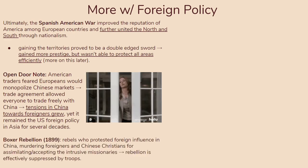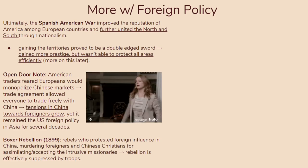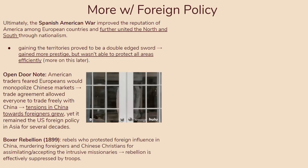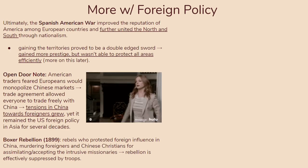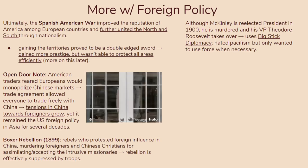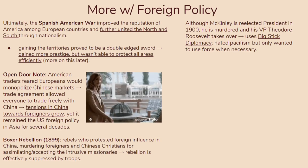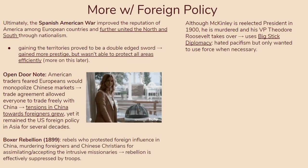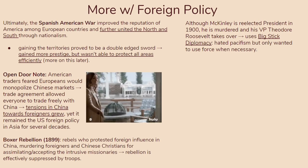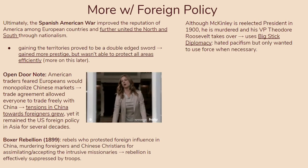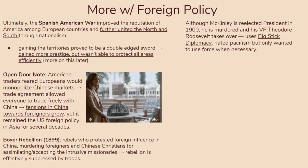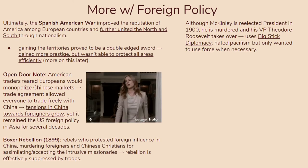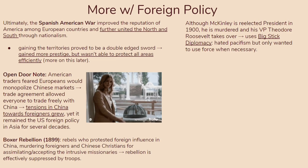Rising tensions in China are seen with the Boxer Rebellion in 1899. Rebels who protested foreign influence began murdering foreigners and Chinese Christians for accepting intrusive missionaries. The rebellion was suppressed by troops, but it showed that foreign policy did have a domestic impact in China. Domestically in the US, McKinley was re-elected president in 1900 but was murdered soon after, and his vice president Theodore Roosevelt took over. Roosevelt is well known for big stick diplomacy — anti-pacifism, using force only when necessary, but not sitting back and letting other countries act against US interests.